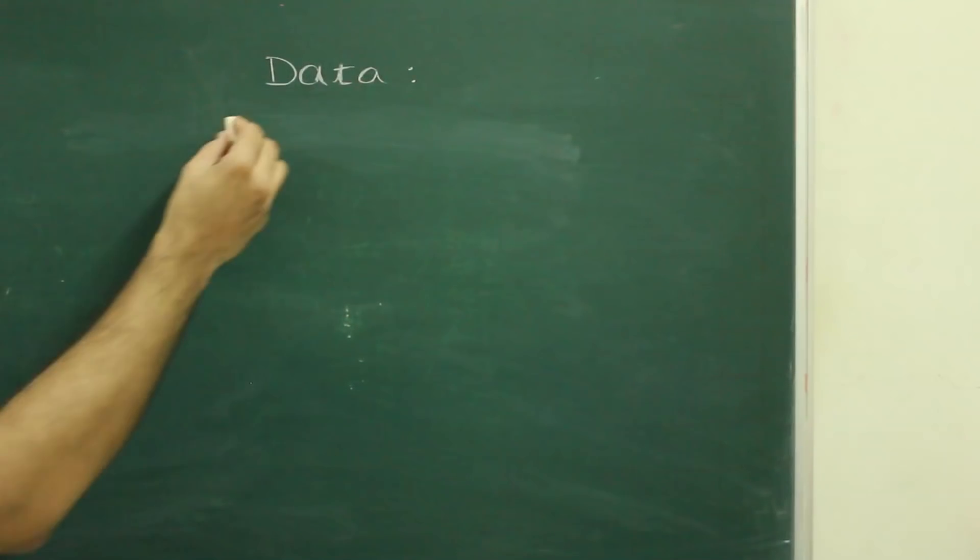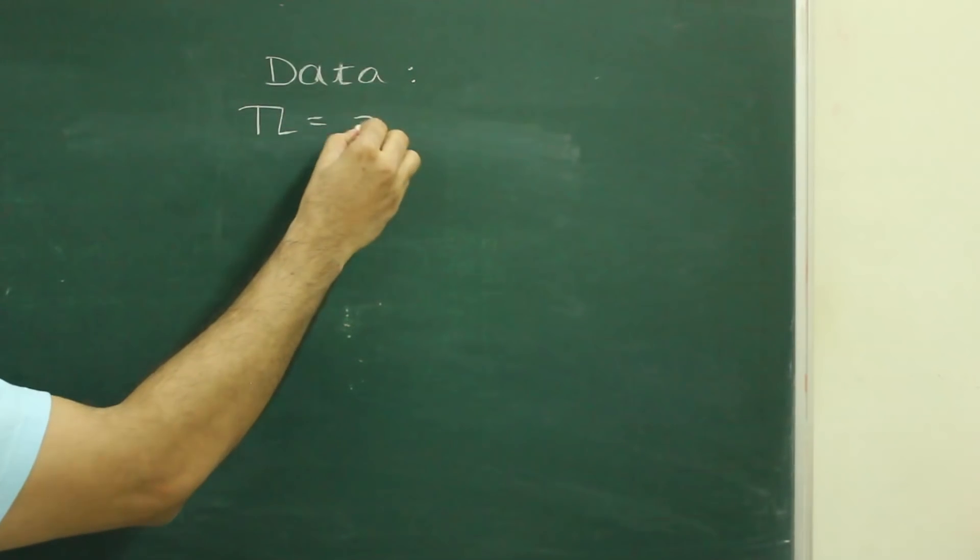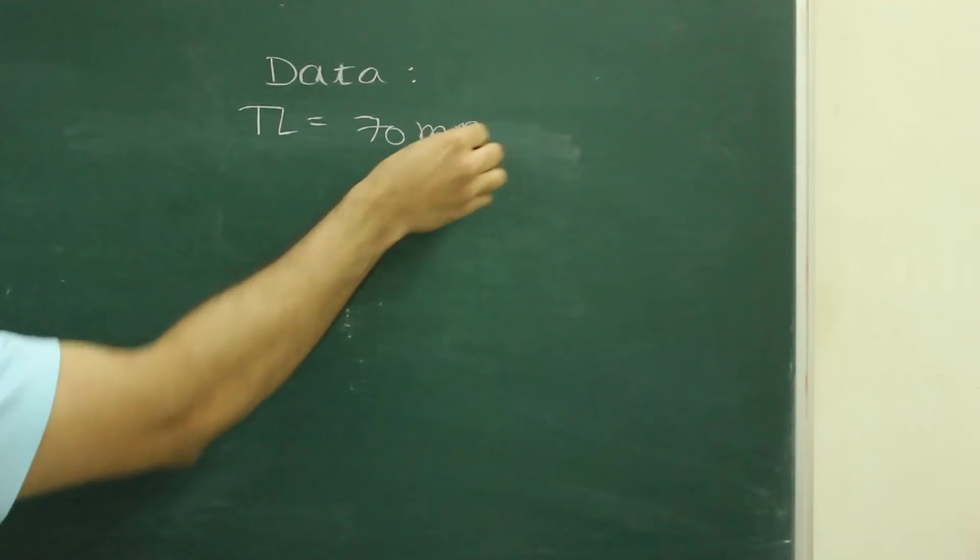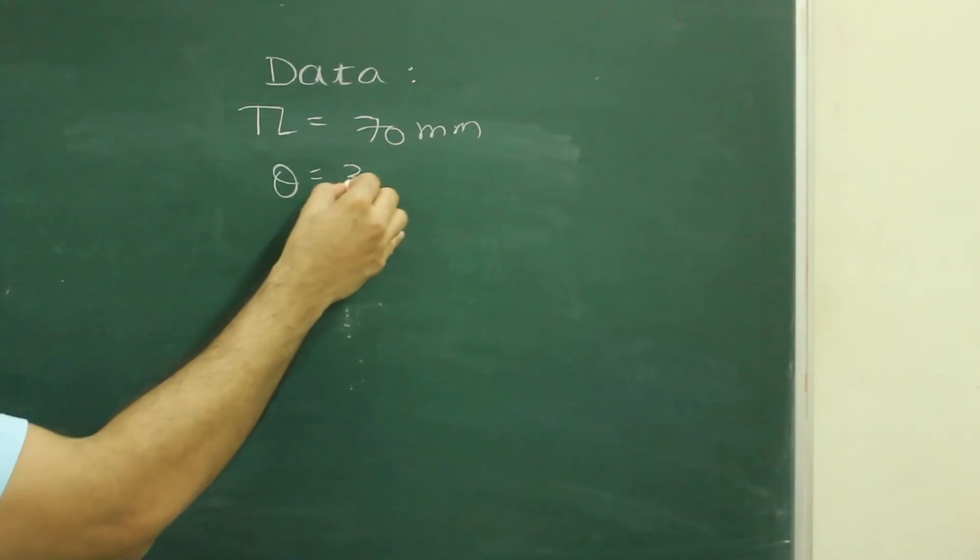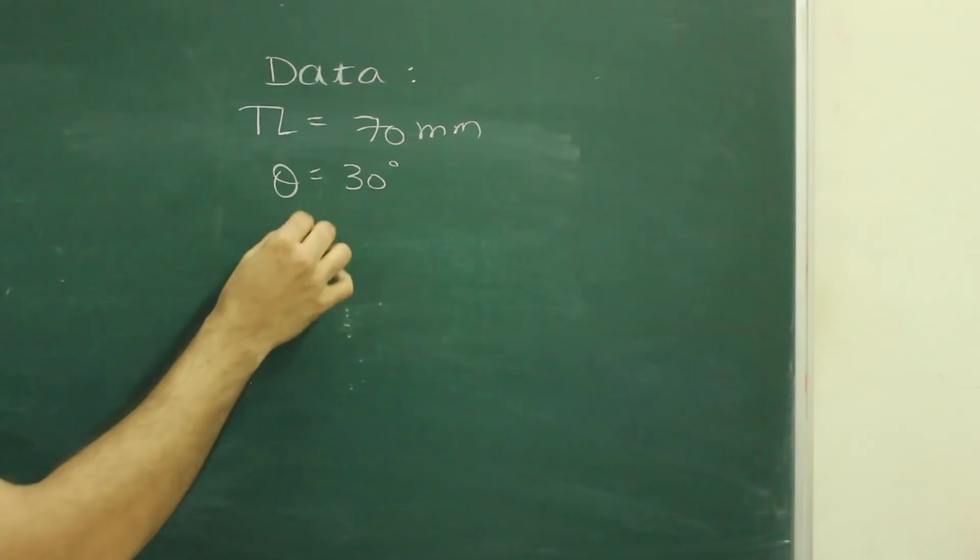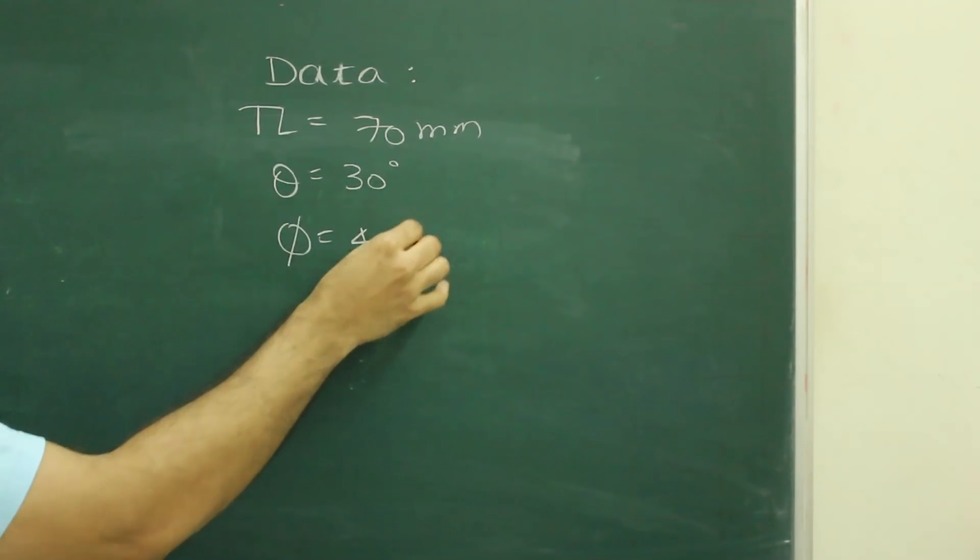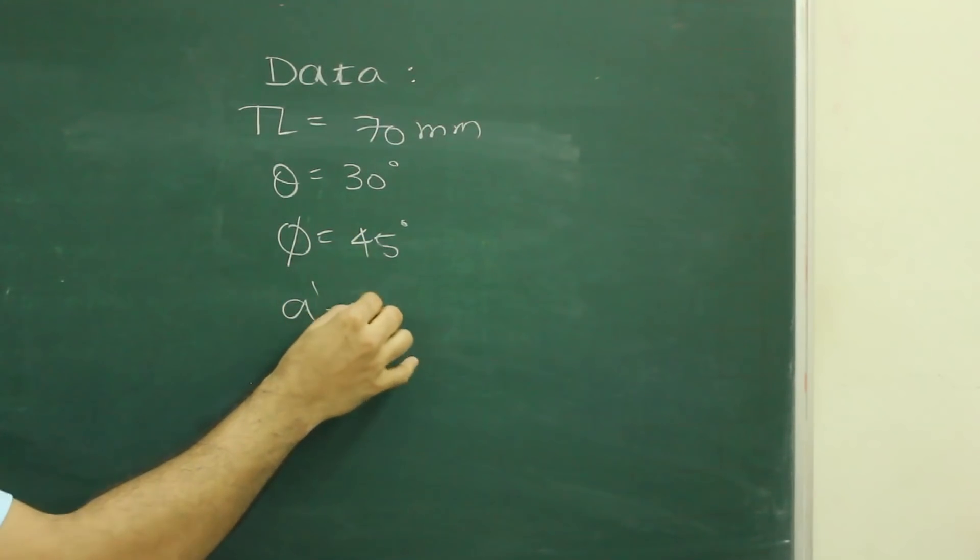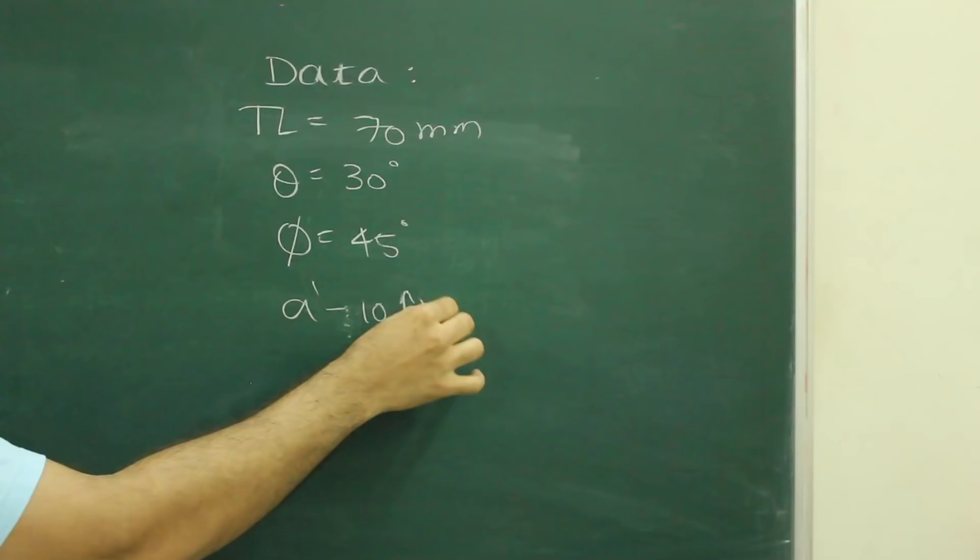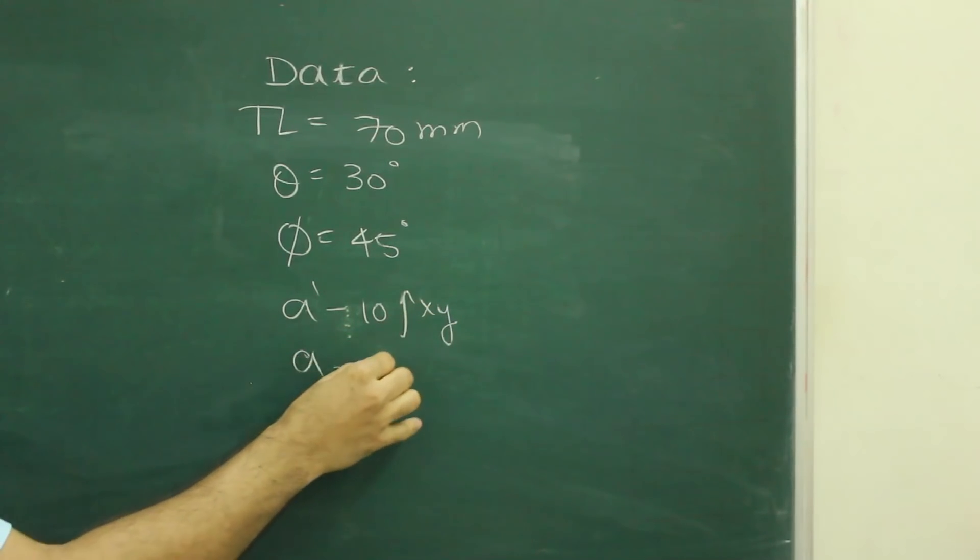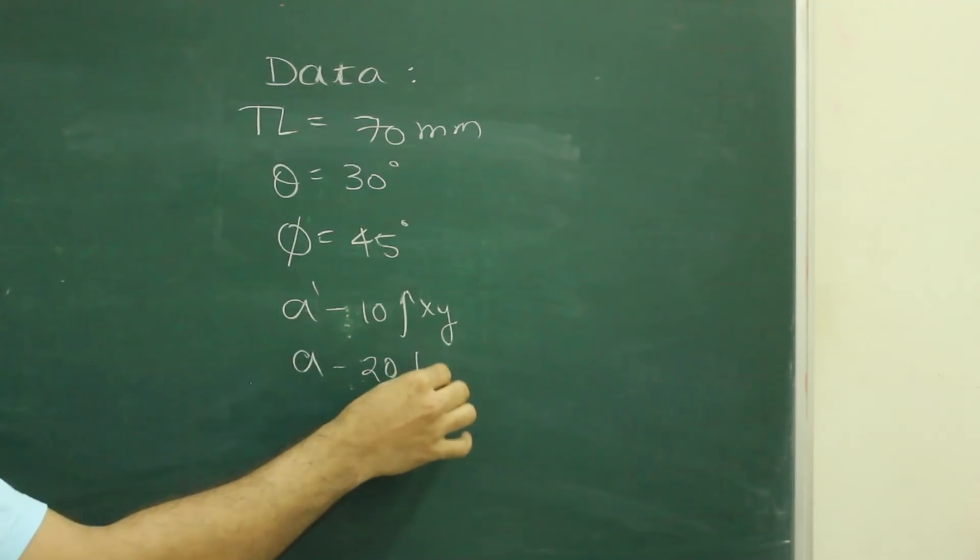So first we will write given data: theta, true length 70 mm, theta 30 degrees, phi 45 degrees, a dash 10 mm above x y line, a 20 mm below x y.